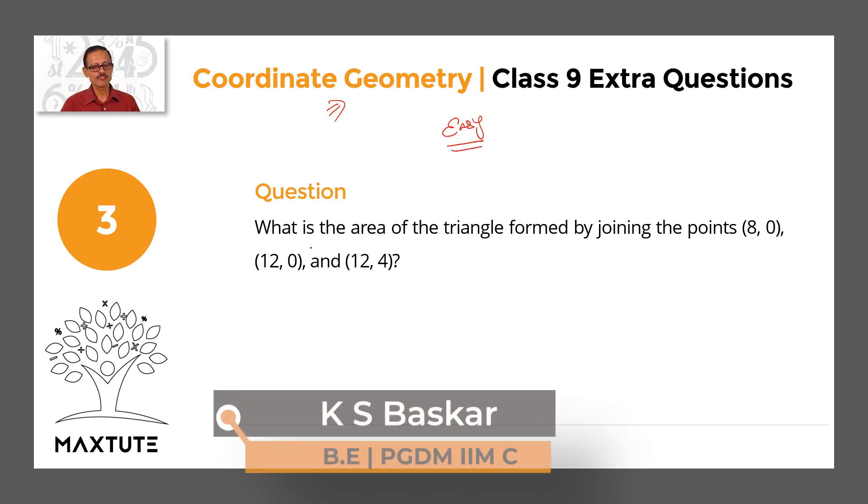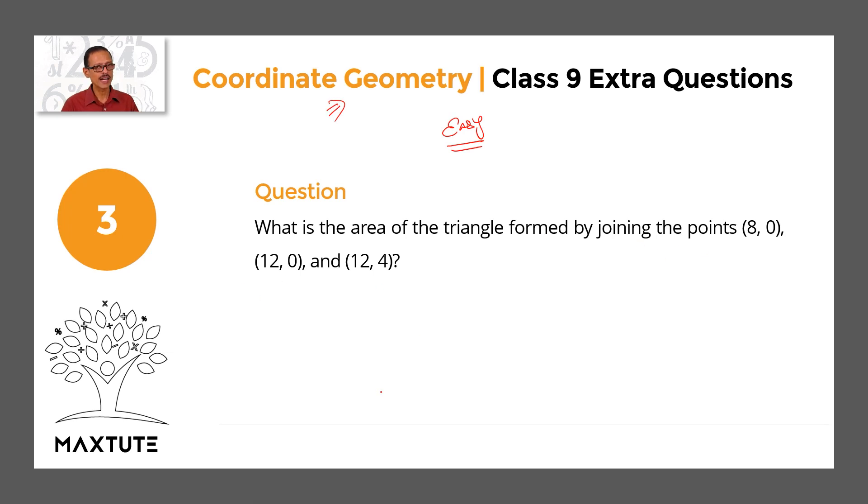What we have to do is find out the area of the triangle formed by joining the points (8, 0), (12, 0), and (12, 4).